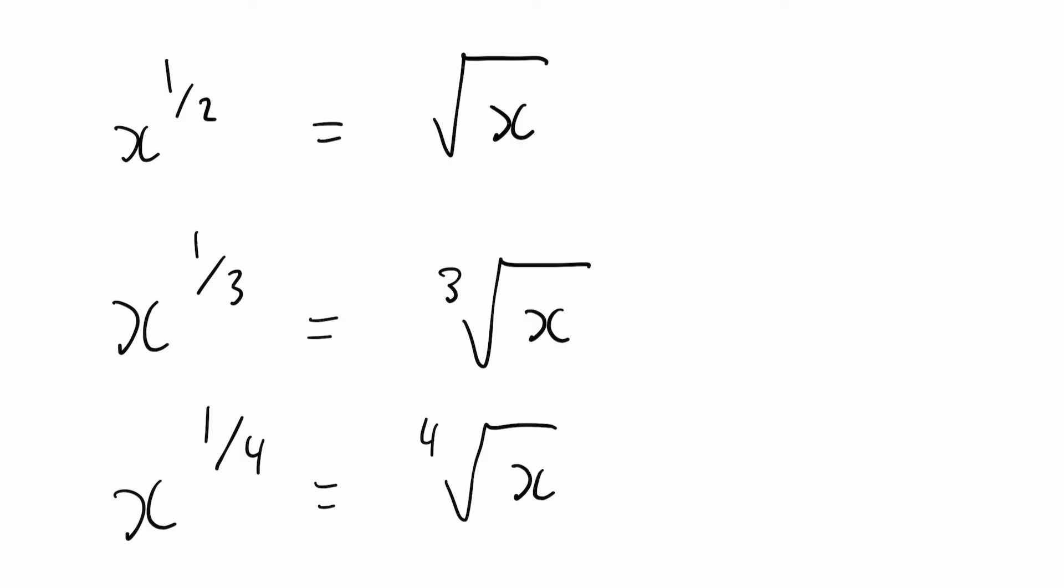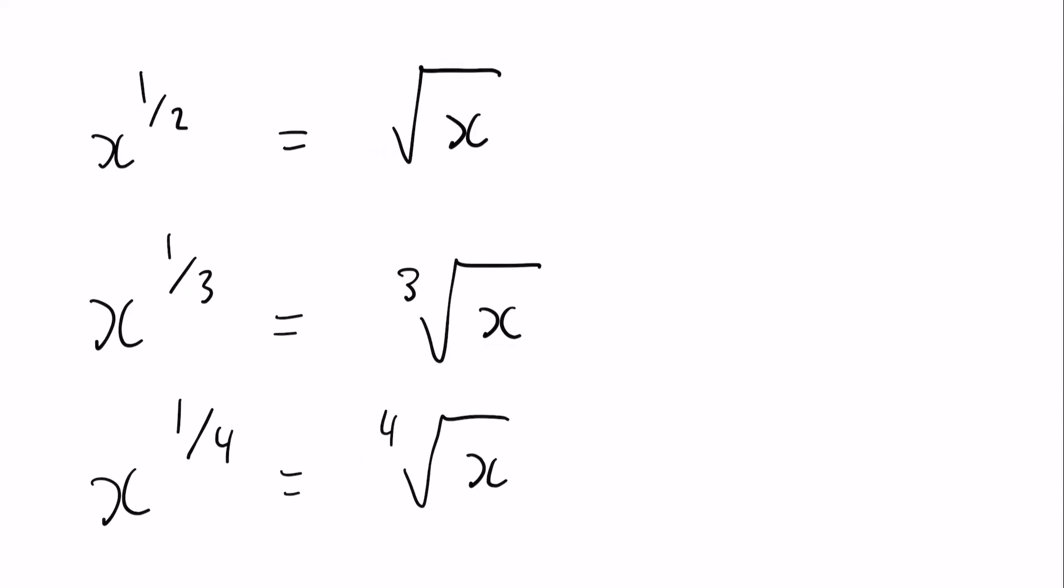Now that is just an example but here are the three main rules to know basically. So x to the power of a half is the square root of x, x to the power of a third is the cube root of x, and x to the power of four would be the fourth root of x.